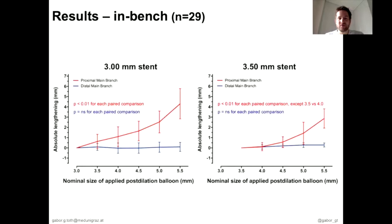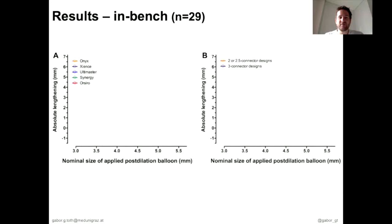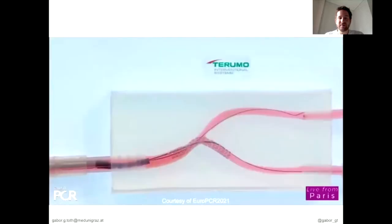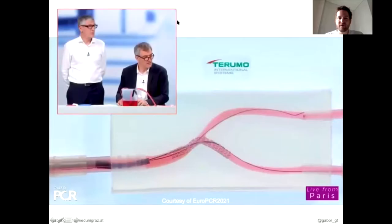This suggests real absolute lengthening of the stent, not just a slipping movement or dislodgement within the vessel model. Comparing different stent brands, we haven't seen any difference, nor when comparing two versus three connector designs. Confirming our findings, the best demonstration of proximal stent lengthening was performed during a bench case at Euro-PCR this year.